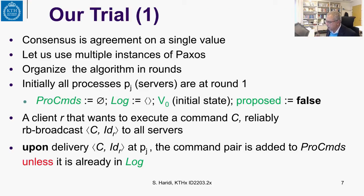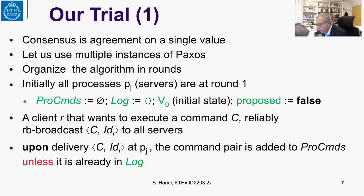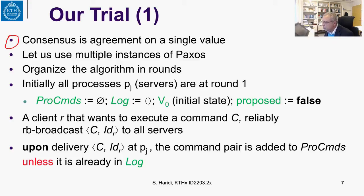If we take this as a black box — a consensus module that proposes and decides — we can build a replicated log by agreeing on a sequence of values. This is what the so-called general multi-Paxos does: use multiple instances of Paxos to agree on sequences of values.